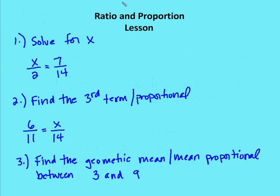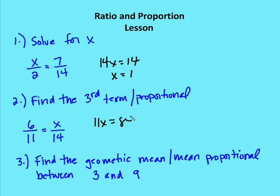Let's work on some practice problems. First, we solve for x using the means extremes product theorem. We get 14x equals 14, so x equals 1. For the next problem, we need to find the third proportional. Using the means extremes product theorem, we get 11x equals 84, so x equals 84 over 11, which is approximately seven point something. We'll leave the answer as 84 over 11.